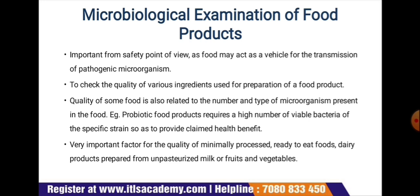It is important from a safety point of view as food may act as a vehicle for the transmission of pathogenic microorganisms. Therefore, it is important to check the quality of various ingredients used for the preparation of food products. The quality of some food is also related to the number and type of microorganisms present. For example, probiotic food products require a high number of viable bacteria of a specific strain to provide claimed health benefits. Minimally processed ready-to-eat foods, dairy products from unpasteurized milk, and fruits and vegetables are more likely to contain pathogenic microbes.